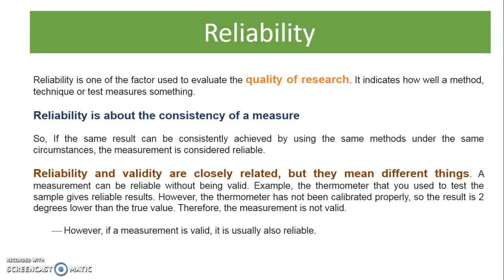Reliability is about consistency and validity is about accuracy, but they mean different things. A measurement can be reliable without being valid. For example, if you use the same thermometer to test the same participants and it always gives consistent results, it is reliable. But if it is not calibrated properly and the result is always two degrees lower than the actual value, then it is not valid — not accurate. However, if a measurement is valid, it usually also gives reliability.